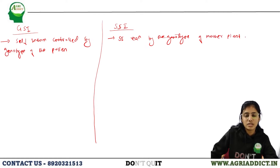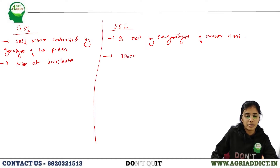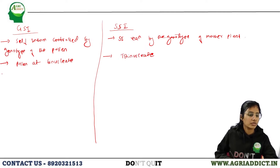In sporophytic self-incompatibility, the reaction is controlled by the genotype of the plant in which the pollen is produced. In gametophytic self-incompatibility, the pollen is released at the trinucleate stage.